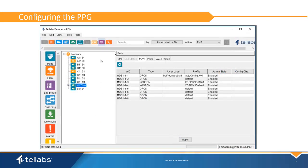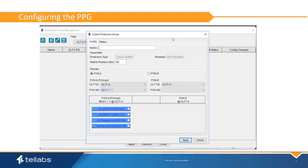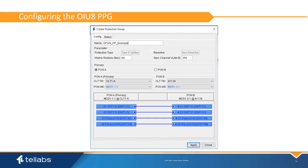Pond protection is configured by clicking on the Pond Protection button on the top of the GUI. Select the Create button to create a new protection group. The Pond Protection group created on an OIU-8 card is non-revertive, meaning the active Pond port is considered the primary and will continue to provide services to the Pond if it is healthy. The wait-to-restore time defines the time the primary and secondary must be active prior to switching, providing a lag to ensure the primary is stable, available, and ready to take over. 60 seconds is the default.